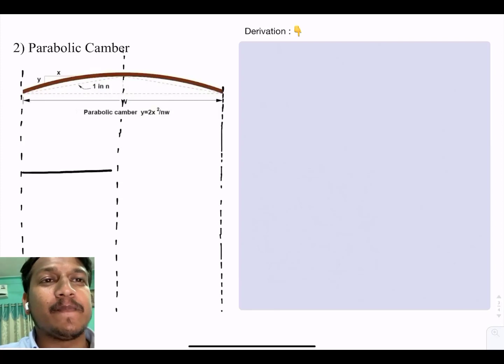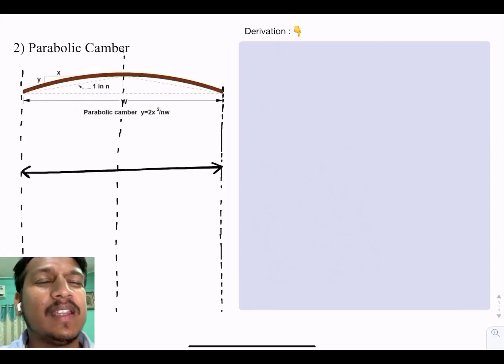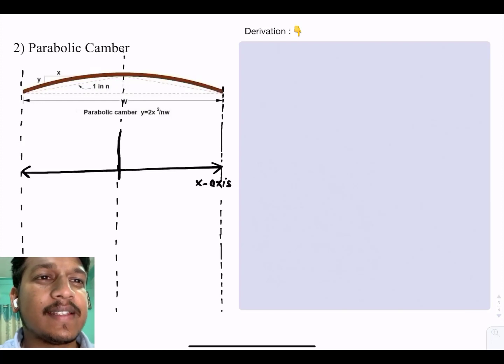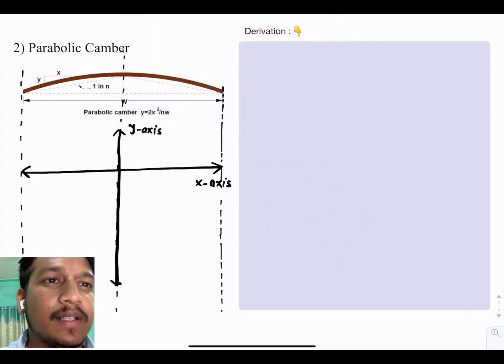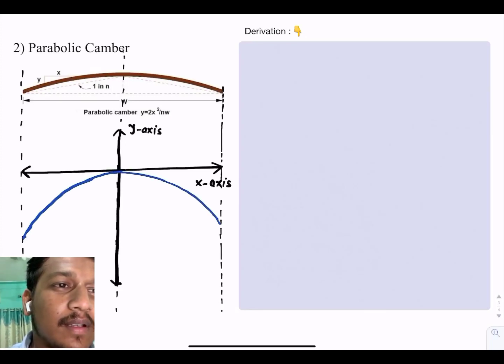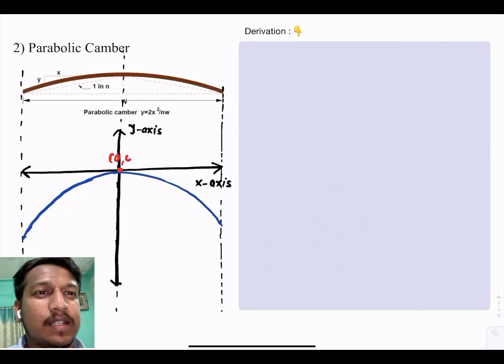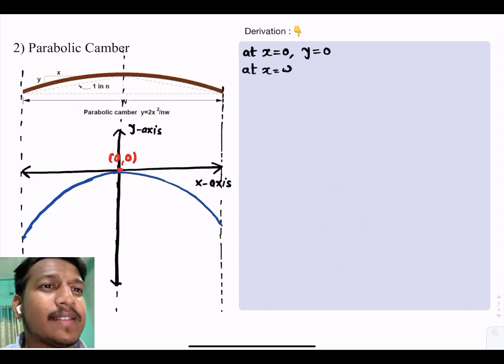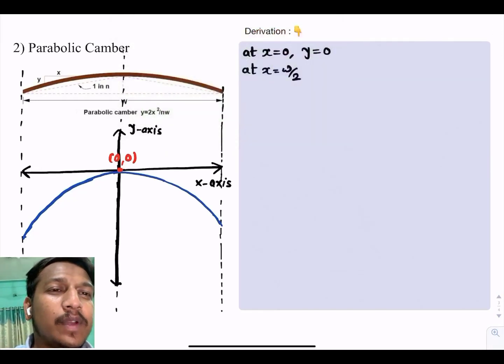Second is the parabolic camber, generally used for frequent overtaking. Here I am showing x-axis and y-axis. I will be drawing the parabola here. The origin is 0, 0.